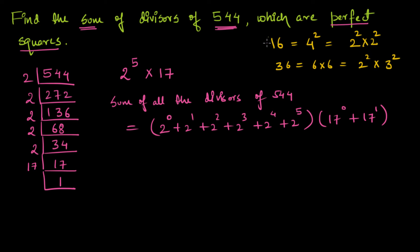A pattern we can observe is that all the prime numbers from which a perfect square is made up are present in even quantities. For example, in 16 we have 2 to the power 4, and in 36 we have two 2s and two 3s — both prime factors appear in even quantities. Hence these are perfect squares.